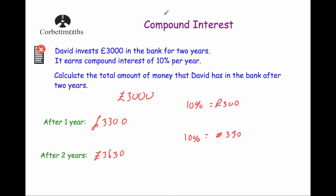For compound interest questions without a calculator, we just keep applying the percentage each time — work out 10%, add it on, then another 10%, add it on, and so on. It could also be decreasing, in which case you get the percentage and take it off each time.